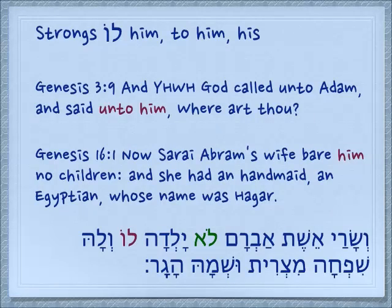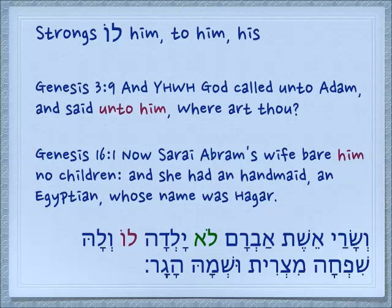In Genesis 3.9: 'And Yehovah God called unto Adam and said unto him — lo, to him — where art thou?' Genesis 16.1: 'And Sarai, Abram's wife, bare to him — lo — no children. And she had a handmaid, an Egyptian, whose name was Hagar.' So we see here: the Sarai, Eshet Abraham — the wife of Abraham — lo yeldah lo. You see the two lo's are spelled differently. The first is negative past tense — she did not bear. And the second lo is 'to him' — she did not bear to him.